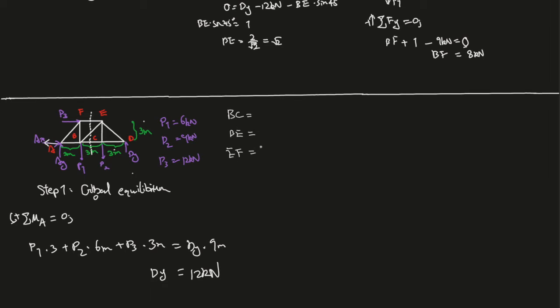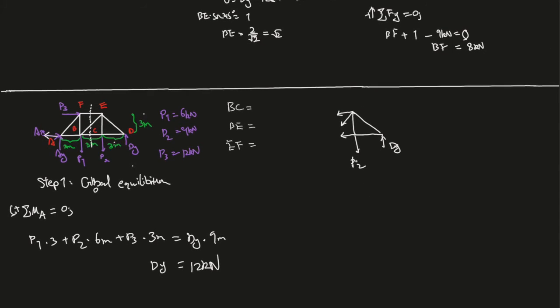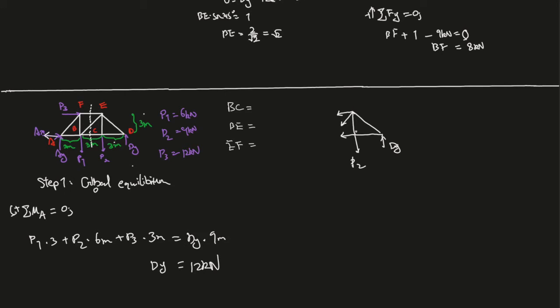Let's draw a quick free body diagram over here, the right side of the truss. P2 is over here, Dy is over here, Dy is 12 we found it. So we have three forces in y-direction and we already know two of these, so we can use sum of forces in the y-direction.